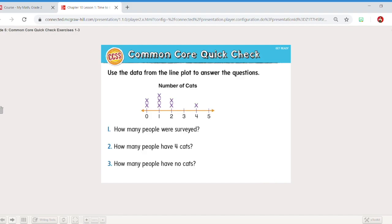Now we're going to jump in and look at a line plot. We're going to review what we've learned before. So you use the data from the line plot to answer the questions. Number of cats. Well it looks like the number of cats are these numbers 0, 1, 2, 3, 4, 5.